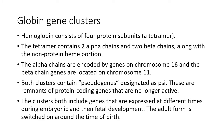Let's talk about globins briefly. The globins are the proteins that make up our hemoglobin, and a hemoglobin tetramer contains two alpha chains and two beta chains, along with a non-protein heme.